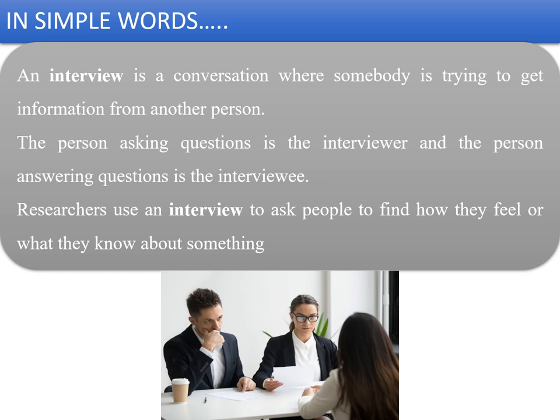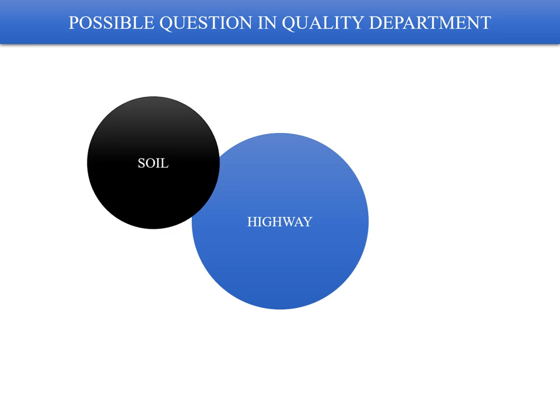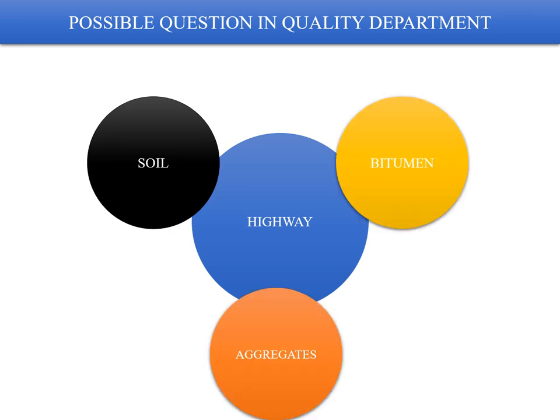Today we will be talking especially about corporate interviews where corporate industries select people to check their competencies on a particular subject and offer them the right position in the industry. Some of the possible questions in the quality control department related to highways are soil, aggregates, and bitumen. Today we will be focusing on bitumen; we will talk about GSB, WMM, and concrete in upcoming modules.